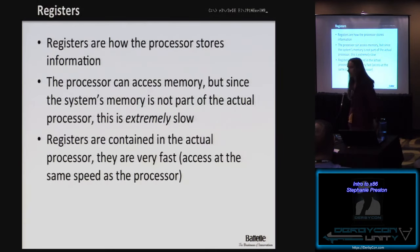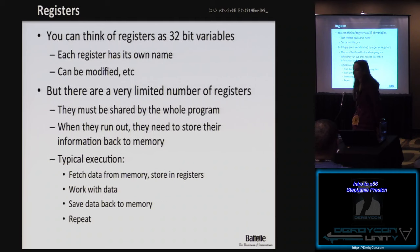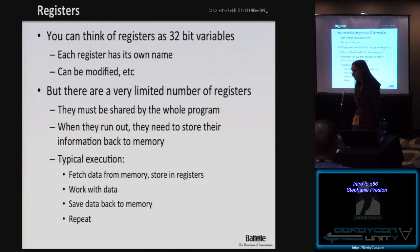The registers are how the processor stores information. The processor can access memory, but since the system's memory is not part of the actual processor, that process is extremely slow. Registers are contained in the actual processor, so it's extremely fast to access and manipulate data in them. It's easiest to think of registers as 32-bit variables — each has its own name and its contents can be modified. There are a very limited number of registers, and they must be shared with the whole program. Typical execution fetches data from memory into CPU registers, does work on it, saves it back to memory, and repeats.